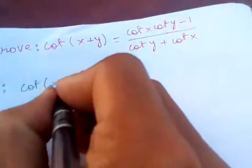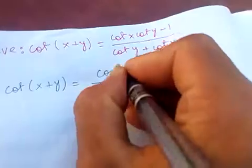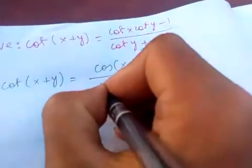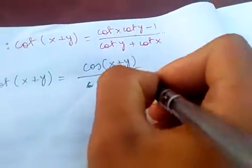So we know that cot of x plus y is cos(x+y) divided by sin(x+y).